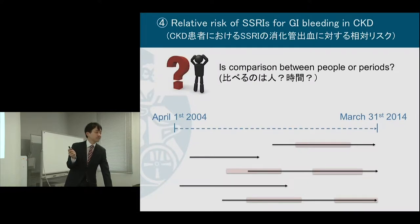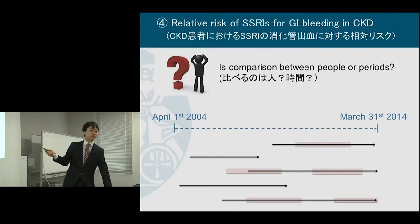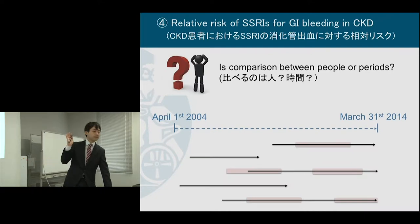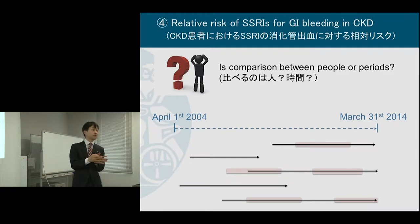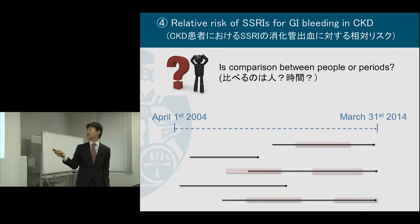I had difficulty deciding what the comparison should be — between people or between periods. If I chose people, I would compare those three people who were prescribed antidepressants at any time, even for a short period, versus the rest. If the outcome were cancer incidence, I should probably choose that option, because once a patient is exposed to a drug, they may be at risk for cancer later. But in the case of GI bleeding, we can expect that the risk is increased only at the time of drug prescription.